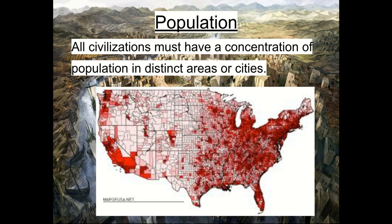Population: all civilizations must have a concentration of population in their area. You've got to have people — you can't just be one person saying 'I am a civilization.' This is a group of people. Highlight 'concentration of population, distinct areas.'